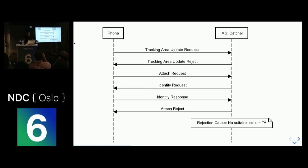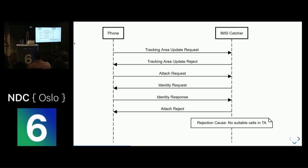So you might think, okay, now I have the IMSI — now what? With the IMSI you can, for instance, initiate phone calls, send text messages based on another subscriber's identity, and you can also do location disclosure — you can track movements. When you're collecting all the IMSIs, you know where they are located.